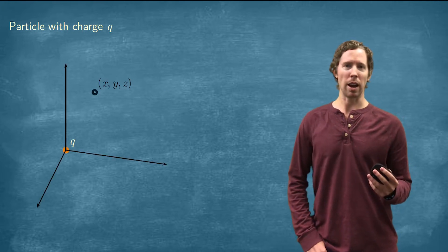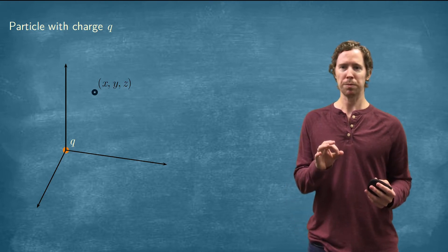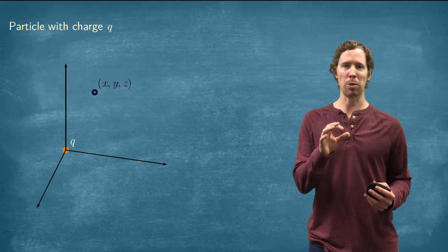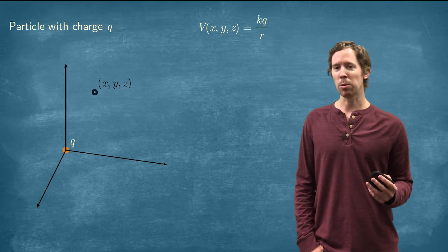So let's say that our point charge is at the origin of a three-dimensional system and we can describe that point as XYZ, and then it's really easy to write down what this potential is.